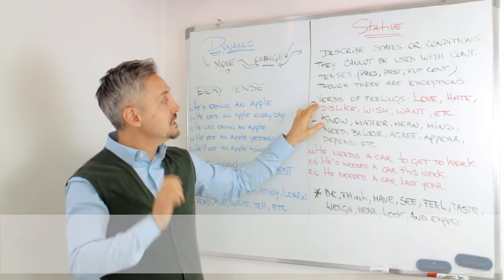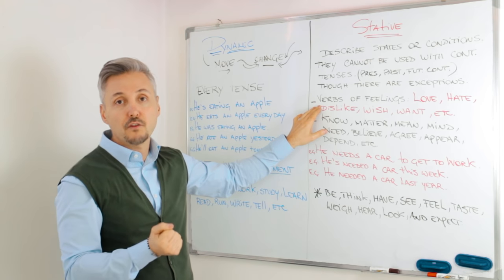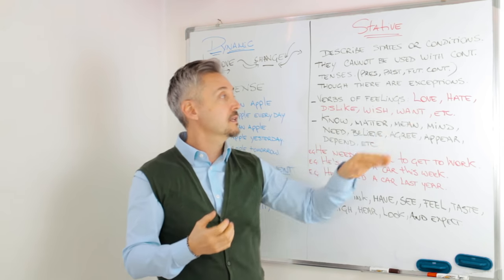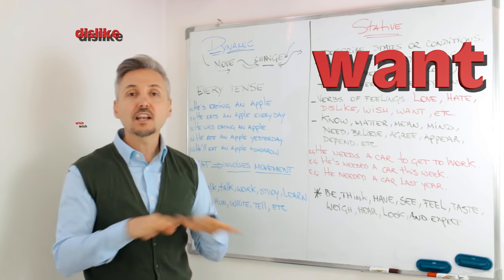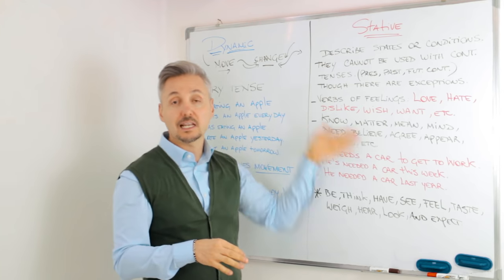For example, verbs that describe feelings: love, hate, dislike, wish, want, etc. They cannot be used with continuous tenses.